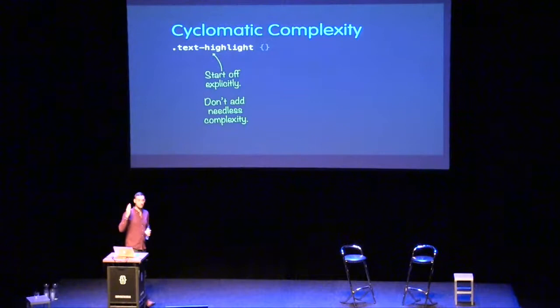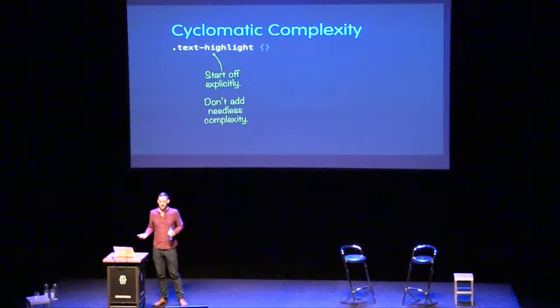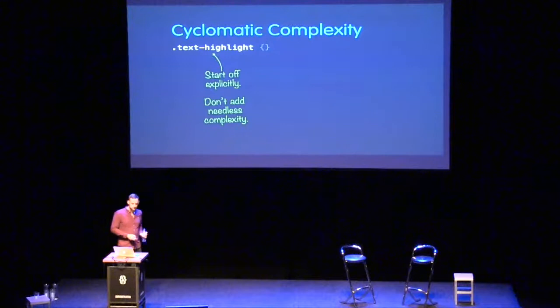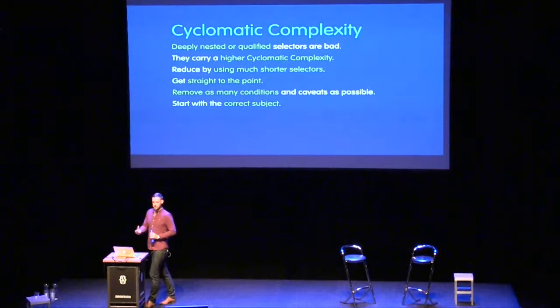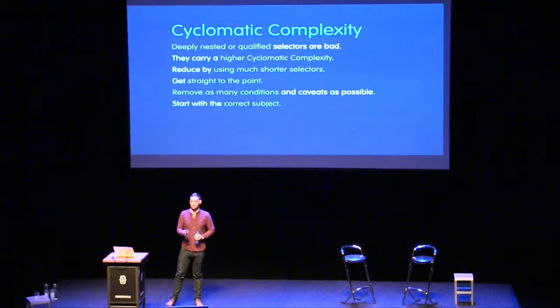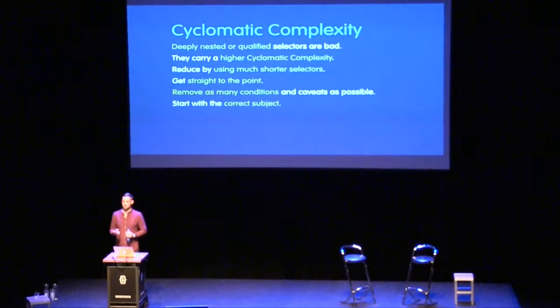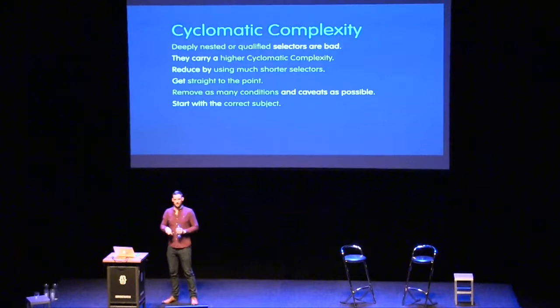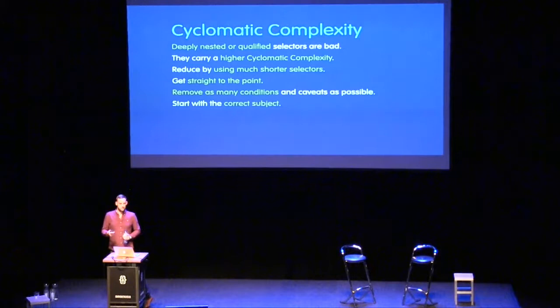Don't start with a very greedy selector and spend time negating it. Target bits of the DOM way more specifically to avoid this complexity. This now has a cyclomatic complexity of one — is there a class of `text-highlight` in the DOM, yes or no? Deeply nested or qualified selectors are bad for a number of reasons: they increase specificity, they are more fragile — there's more chance for something to go wrong — and they're much less portable. They also make files bigger — any bytes in selectors are dead weight that even the most intelligent minifiers won't touch.